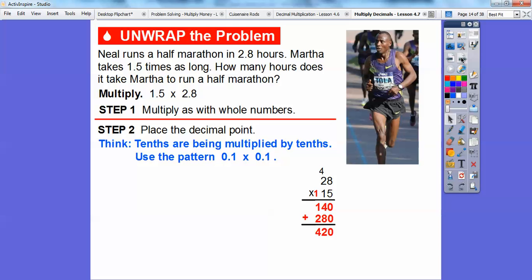Now let's place the decimal point back in the picture. Think 10s are being multiplied by 10s. This is 1 and 5 tenths, this is 2 and 8 tenths. So we're multiplying 10s by 10s. We're going to use the pattern of 0.1 times 0.1. Well, remember the patterns we just discussed. 0.1 times 0.1 says we move that decimal over. So when we multiply it, 1 times 1 is 1. The decimal is really here and we move it over two places.